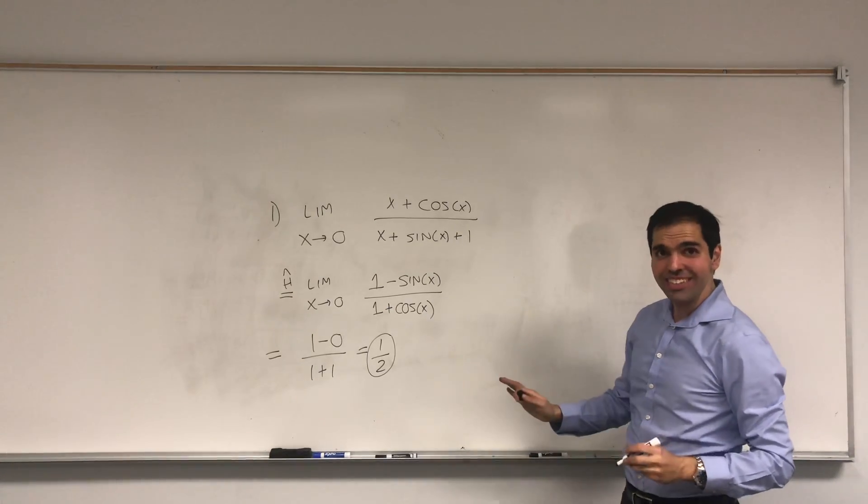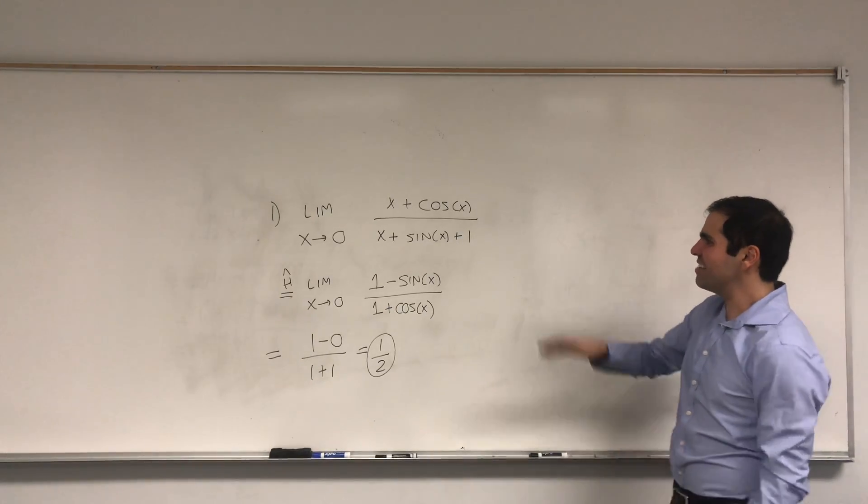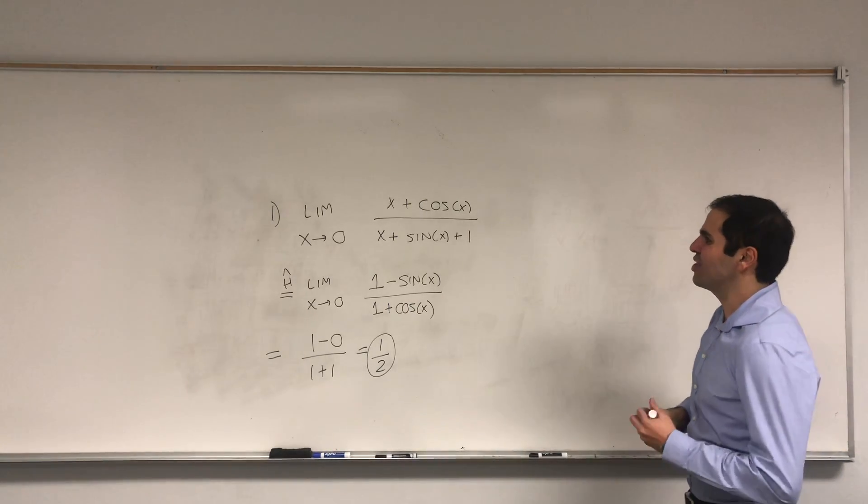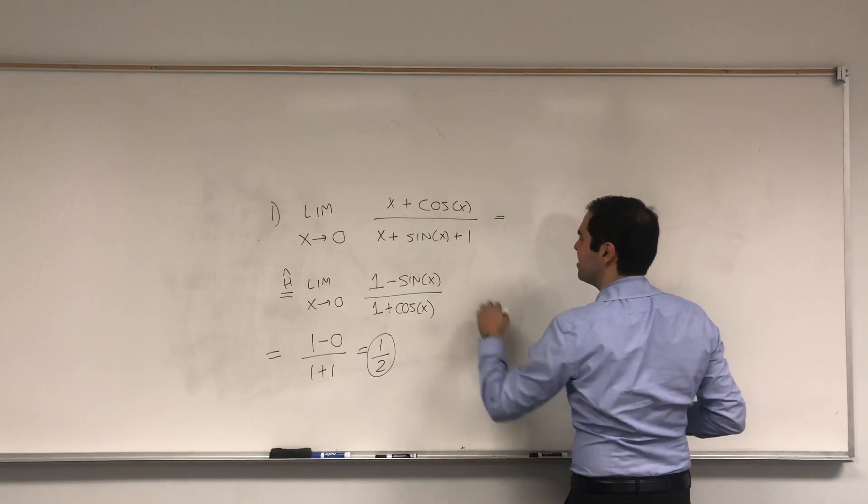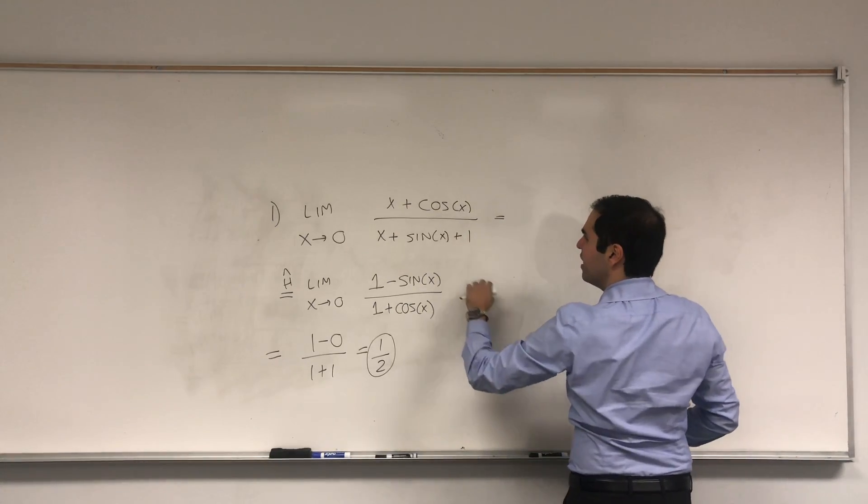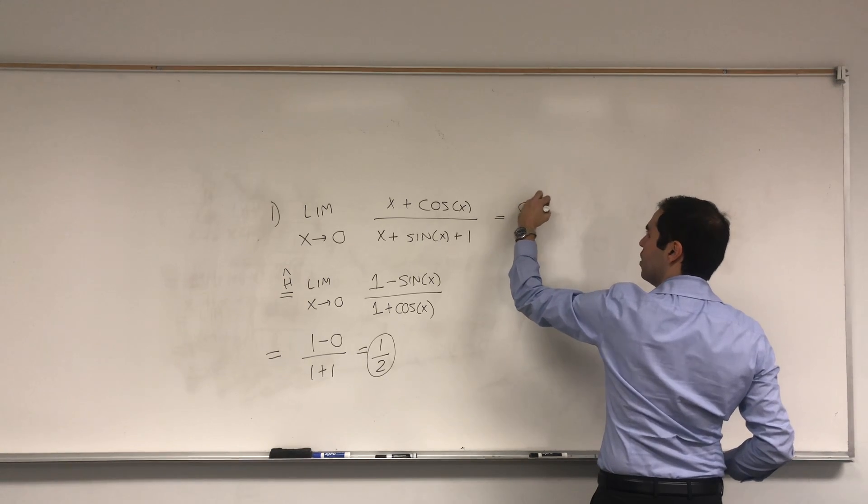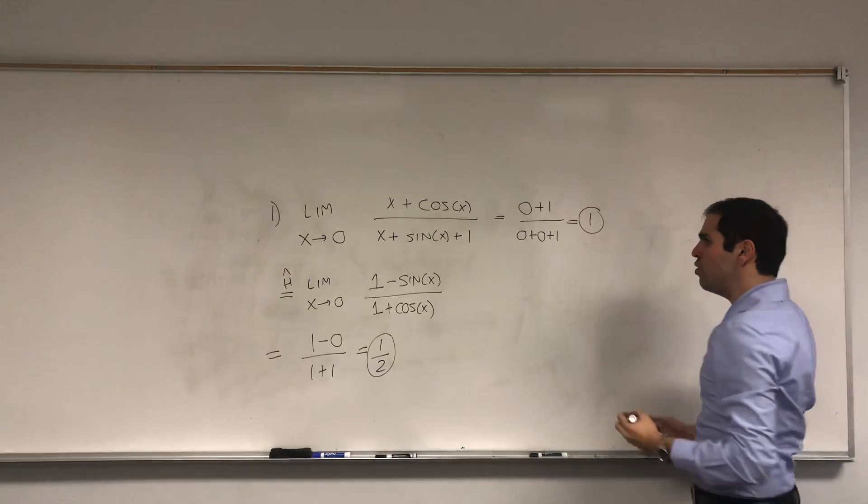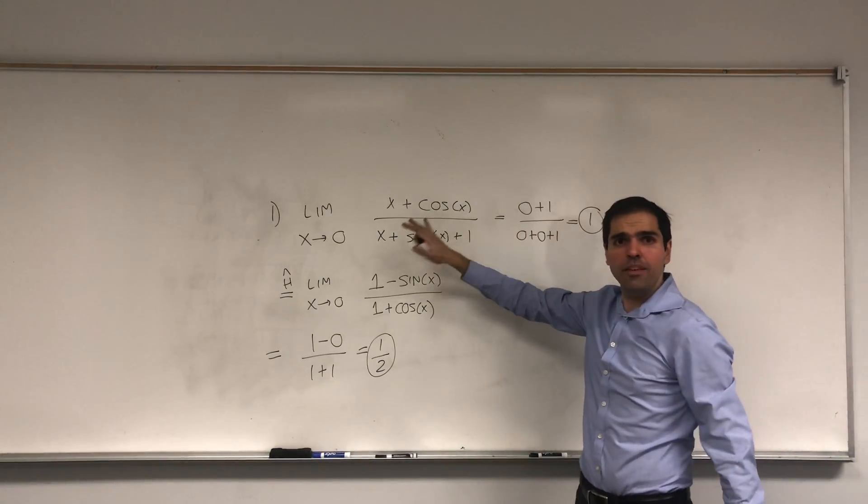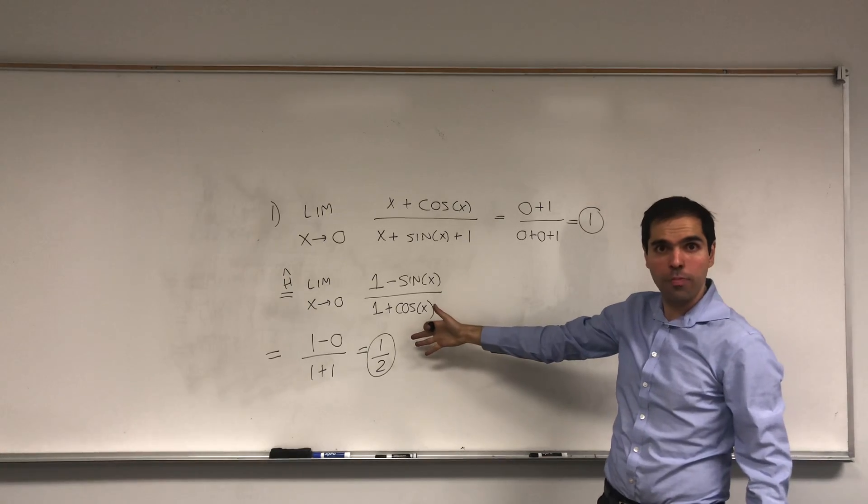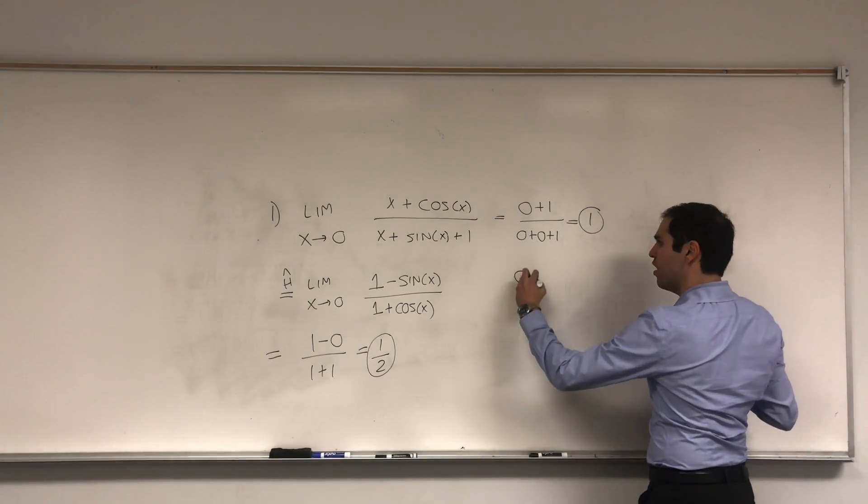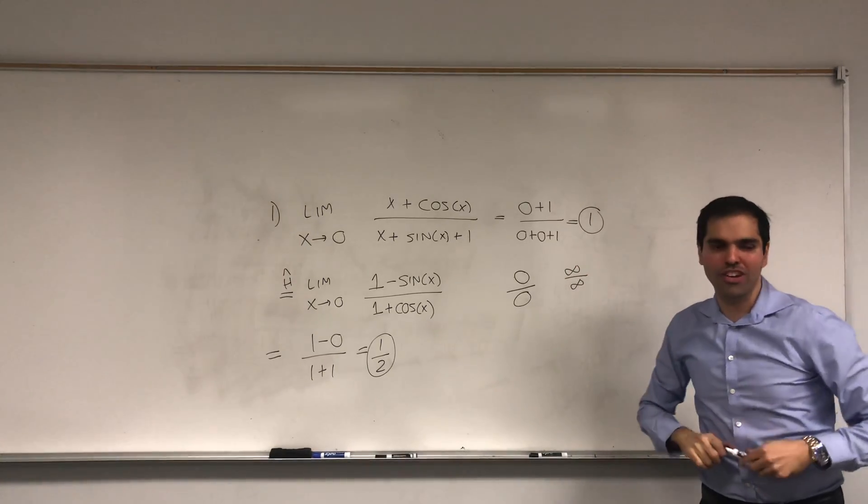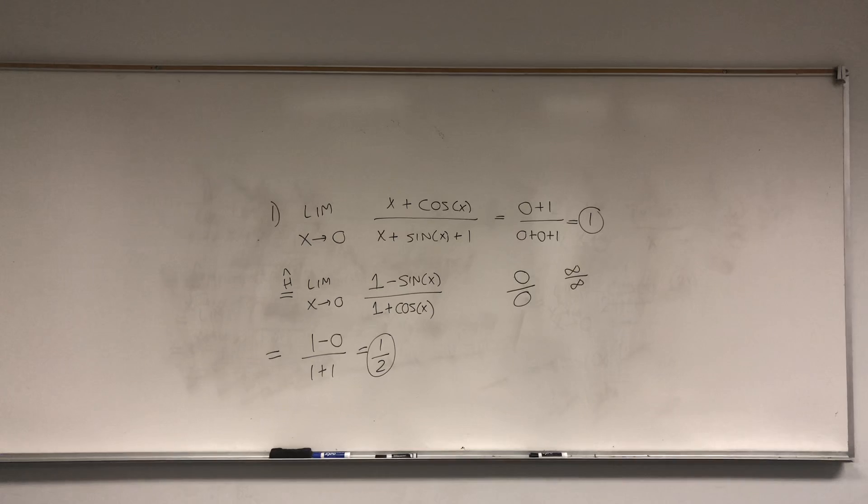Well, it turns out the limit is not 1 half, because I'm sure a lot of people will forget to check whether it's indeterminate. And in fact, let's see, here what we get is, it's actually 0 plus 1 over 0 plus 0 plus 1, which is 1. So, not indeterminate at all, and in particular, we cannot even apply L'Hopital's rule here. L'Hopital's rule only works for 0 over 0 or infinity over infinity. So, that was the first problem.